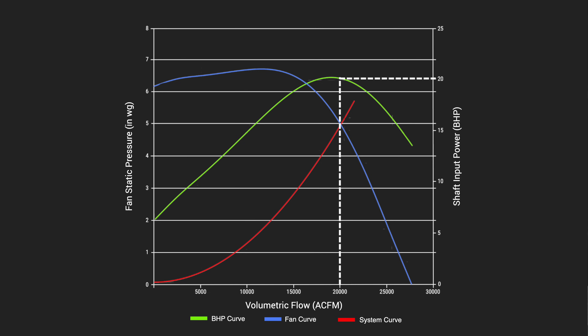At this operating point, the fan consumes 20 brake horsepower. To summarize our example, our fan is moving 20,000 cubic feet per minute while generating 5 inches of static pressure, which it needs to do to overcome the system's resistance and deliver the airflow. And to do all of that, the fan consumes 20 brake horsepower.